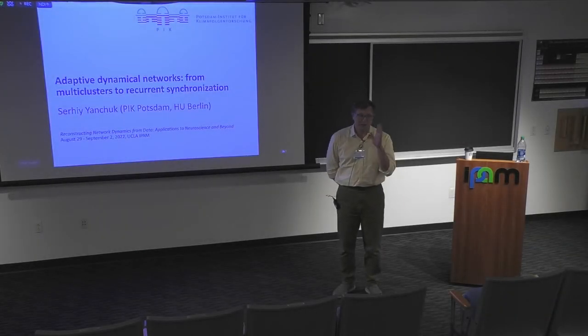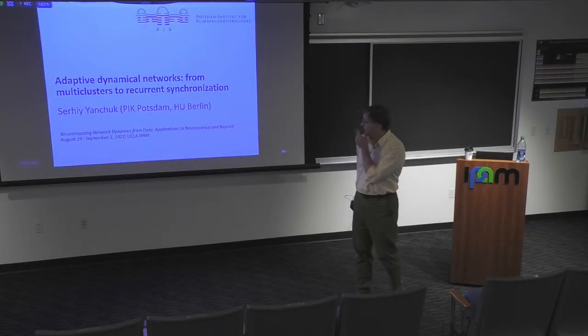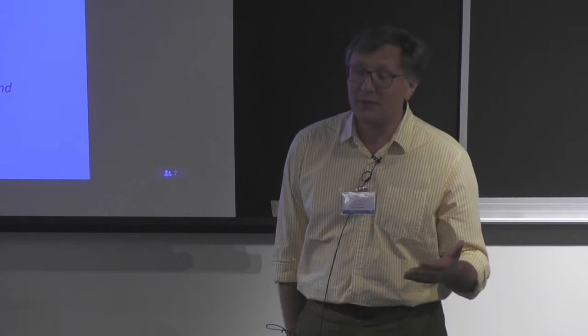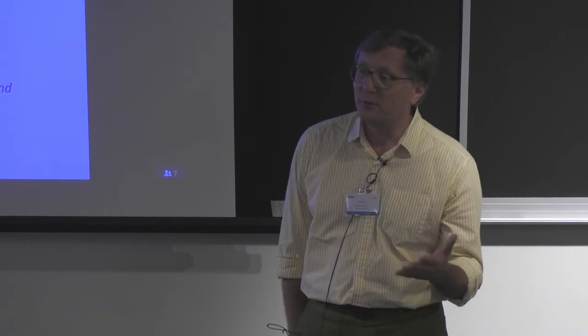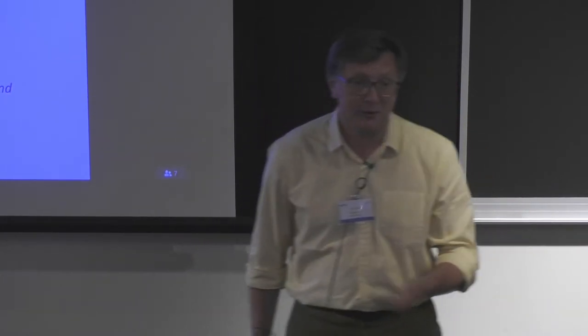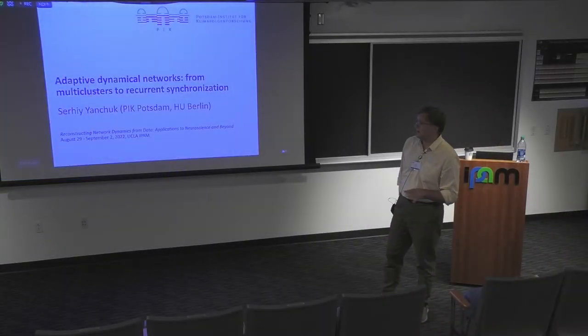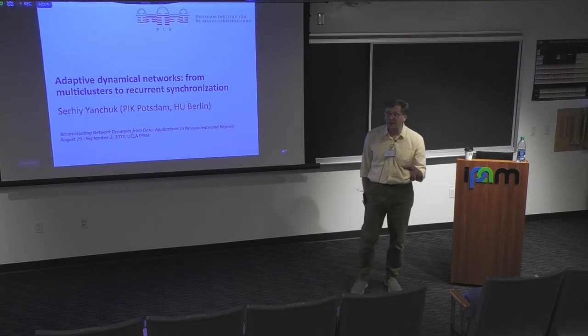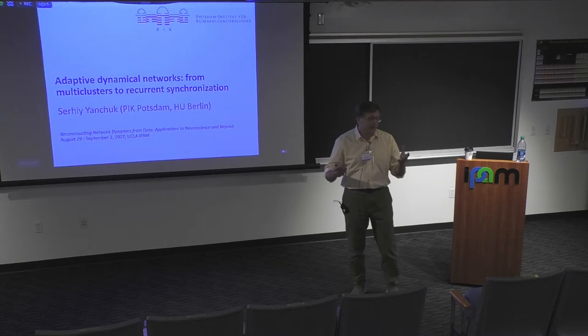My talk is about adaptive dynamical networks. You have seen several talks on neural networks with plasticity — the previous talk of Sarah, the talk of Peter Tass — and you have seen how important it is that a neural network changes connections with time. After injury or when we learn something, our brain makes new connections. This talk is about how we can model it mathematically, what classes of adaptive networks we can have, and what kind of basic phenomena we can expect in these systems.